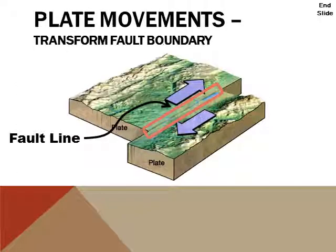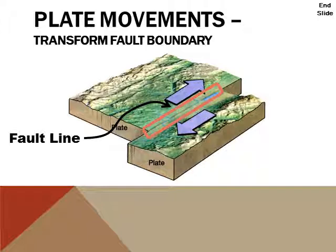The last plate boundary is the transform fault boundary. So you get plates that move away from each other, plates that move toward each other, and plates that slide past each other. What happens here is these two plates don't have smooth surfaces — they've got rocks sticking out into the other plate, and as they're trying to slide past each other, those rocks lock in place until there's enough pressure to move them. In that process, you get a lot of vibrations and earthquakes that form at a fault line because of the sliding past each other, and that sudden jerk between the two plates will cause a lot of vibrations and a lot of earthquakes.